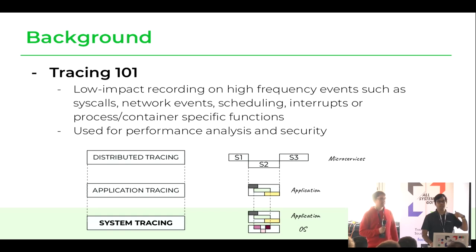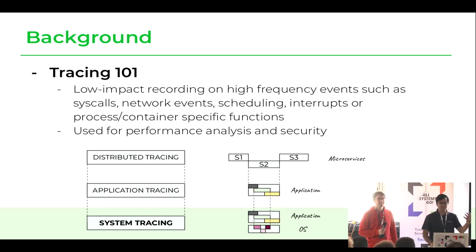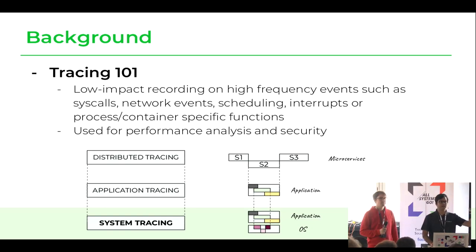Tracing runs on very high-frequency events generated by the OS — such as syscalls, interrupts, and scheduling events — so it needs to be super high-performant. The basis of tracing is instrumentation, and it's used for both performance analysis and security. Based on the same instrumentation of a specific function, you can use it for either purpose.